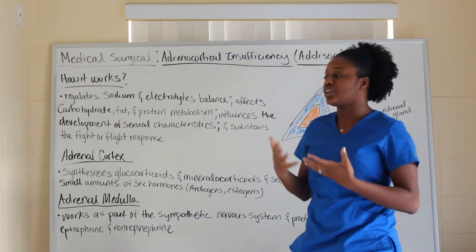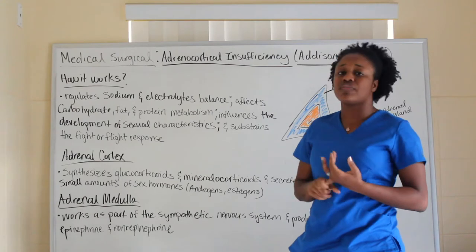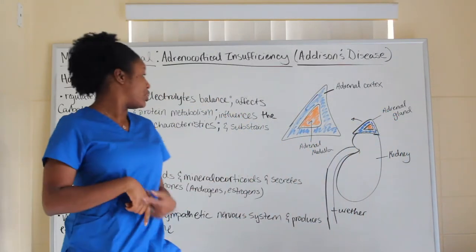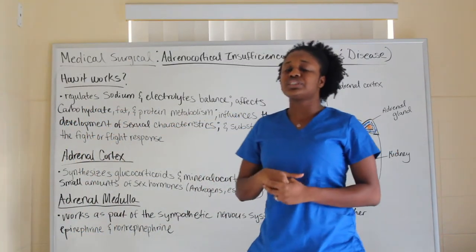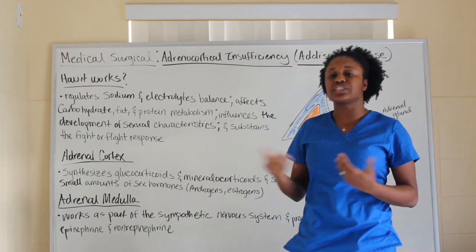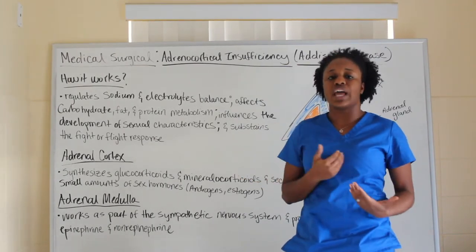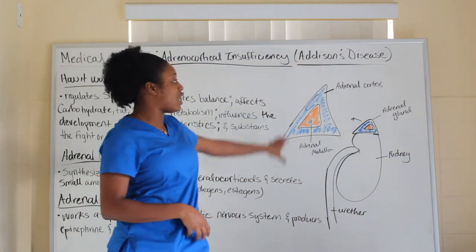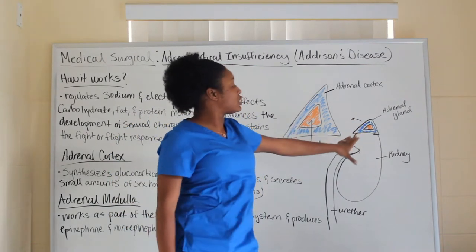The adrenal gland regulates sodium and electrolyte balance. It also affects carbohydrate, fat, protein, and metabolism. It influences the development of sexual characteristics because it secretes the sex hormones. It also helps to sustain the fight-or-flight response.